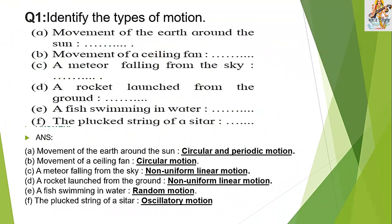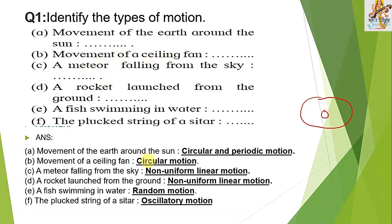First question: identify the types of motion. Movement of the earth around sun — which motion is it? It is circular and periodic motion. Earth rotates around itself and also rotates around the sun in an elliptical orbit. Movement of a sailing fan is an example of circular motion.